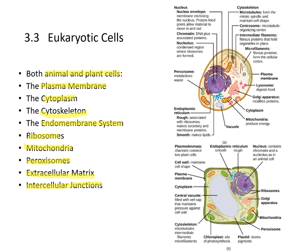The Golgi apparatus and endoplasmic reticulum — both smooth and rough — make up the endomembrane system. That's in plant cells over here, and in animal cells they're over here. The Golgi apparatus is shown here. We'll go over more of this in detail.